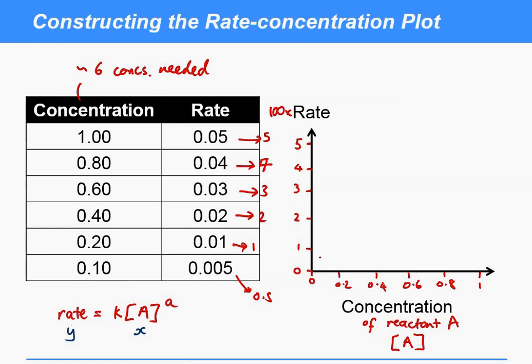0.2 we're up at 1, 0.4, 0.2, 0.6 we're up at 3, 0.8 we're up at 4, and 1 was up at 5.